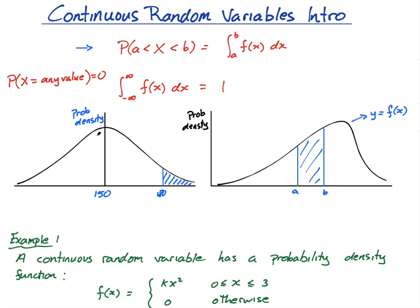A normal distribution, technically in theory, can go on to negative infinity and positive infinity, even though obviously height can't be negative. So that's my introduction. The area under the curve gives you the probability, and to find the area under the curve, we integrate. That's it.